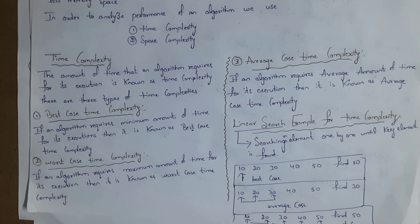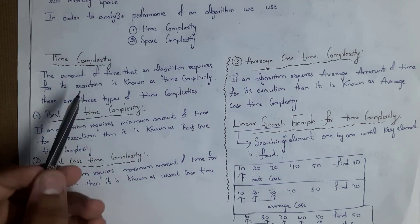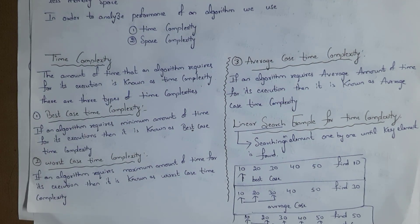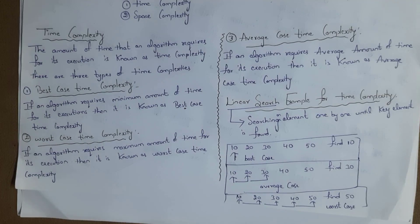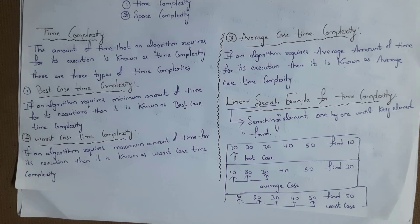First, I will explain what is time complexity. The amount of time that an algorithm requires for its execution is known as time complexity. There are three types of time complexities: best case time complexity, worst case time complexity, and average case time complexity.